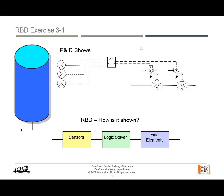The sensor is in series with the logic solver, which is in series with the final elements. This means we need the sensors to work, the logic solver to work, and the final elements to work — all of them — in order to have success. This is different from the fault tree, where the thinking is always the opposite from the reliability block diagram.